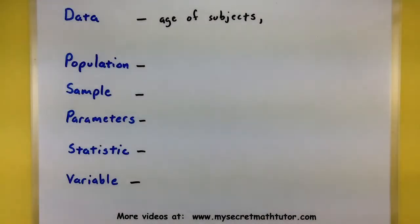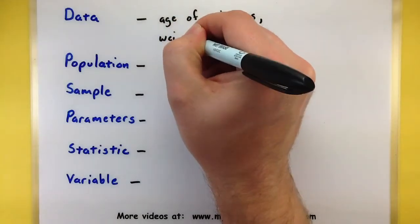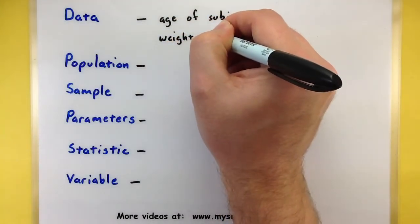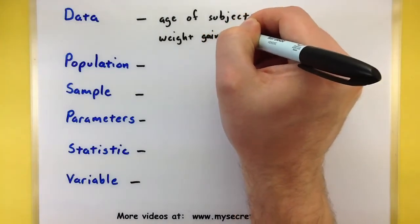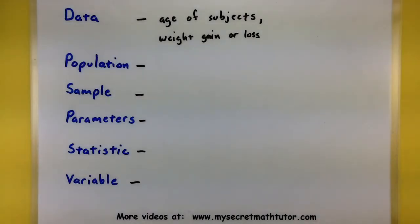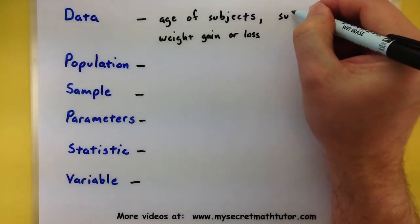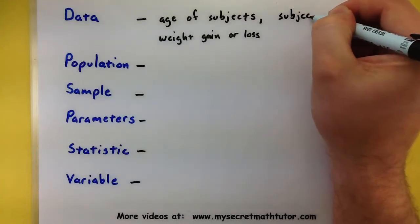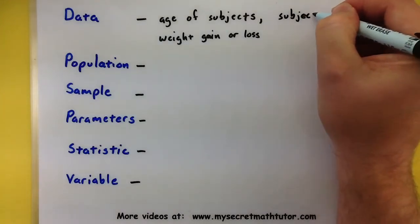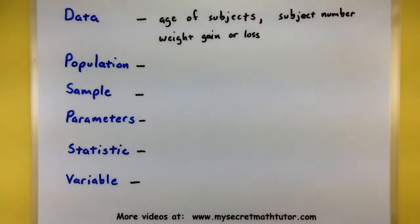Of course, since we're interested in whether they gain weight or lose weight on the pancake diet, we'll want to see if there's any weight gain or loss. And we'll also probably keep track of some sort of subject number, you know, maybe we'll number them 001 and 002, just so we can keep track of them all. Alright, so that's just a little bit of the data we'll collect.